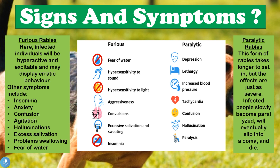The furious type of rabies is present in 80% of patients, while paralytic rabies is present in 20% of patients. Paralytic rabies takes longer to set in, but the effects are just as severe. Infected individuals slowly become paralyzed, will eventually slip into a coma, and die.